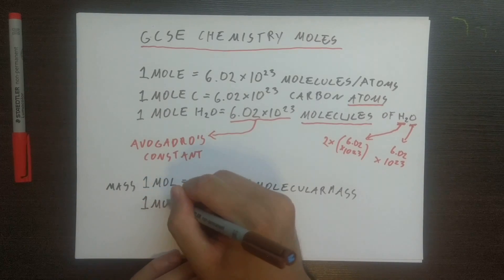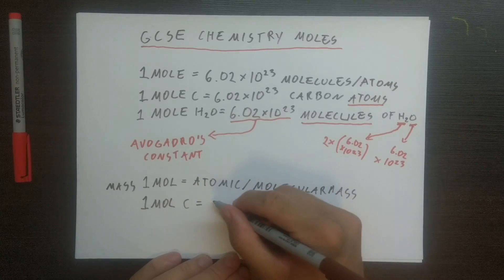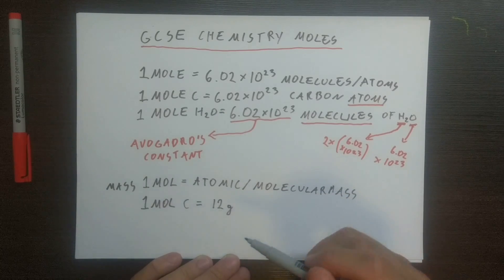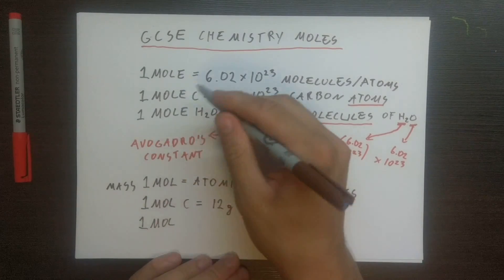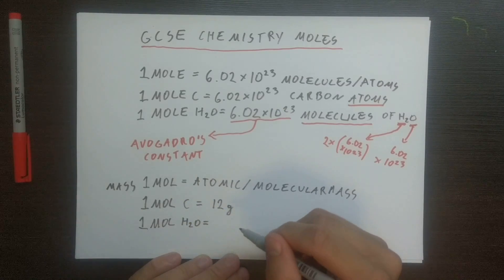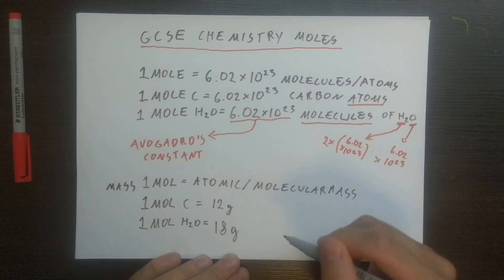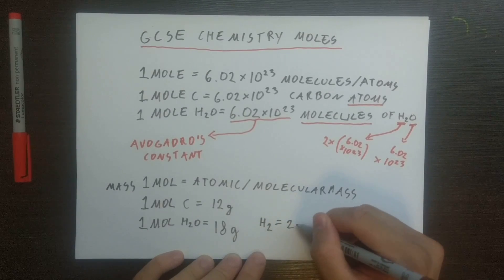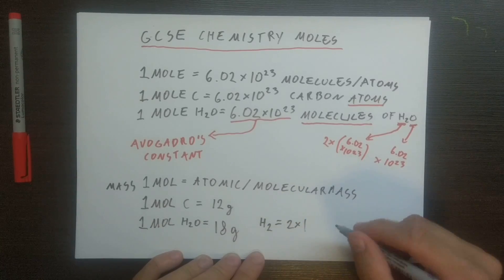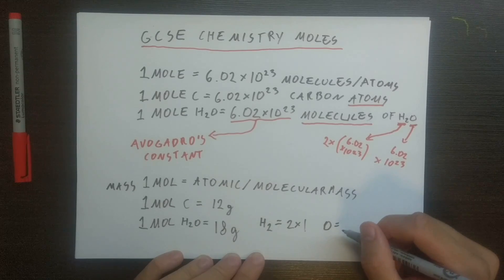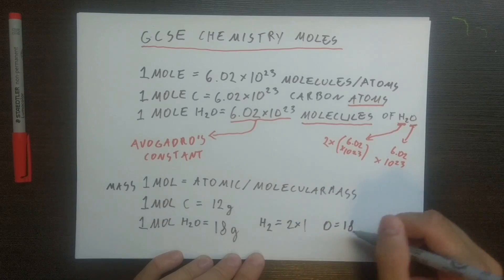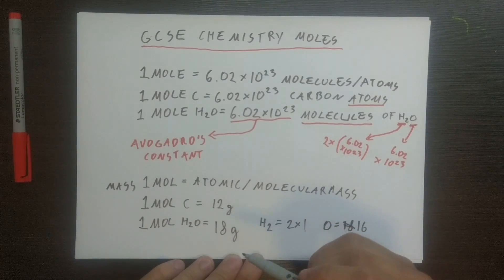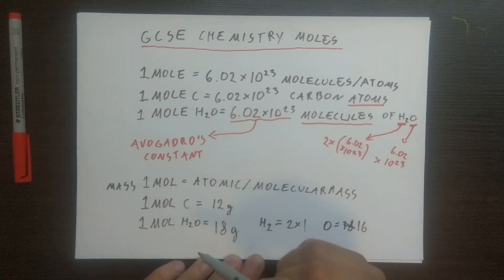For example, one mole of carbon is equal to 12 grams because, as you can see on the periodic table, atomic mass of carbon is 12. Likewise, one mole of water is equal to 18 grams. How? Because we have two hydrogen molecules - this is two times one. Hydrogen has a mass of one. And we have one oxygen molecule, which is a mass of 16. Sorry, oxygen has a mass of 16. If we add those two together, we will get 18 grams.